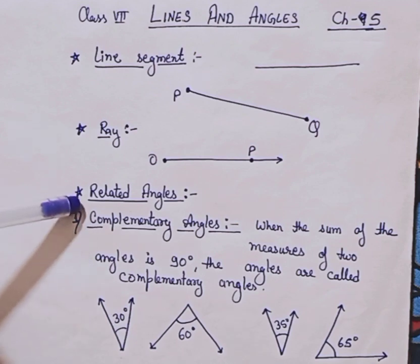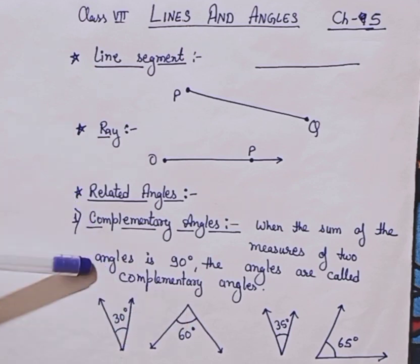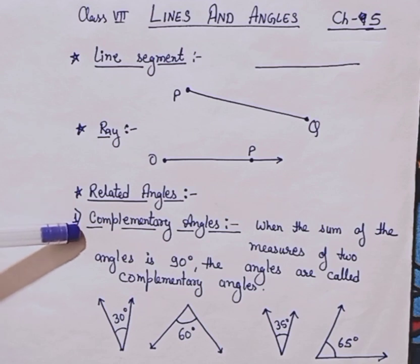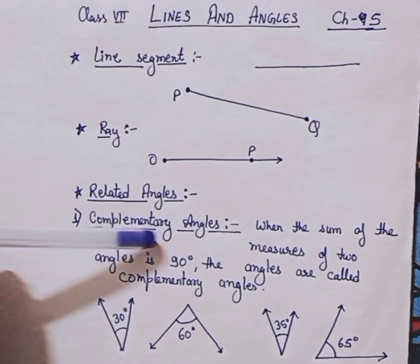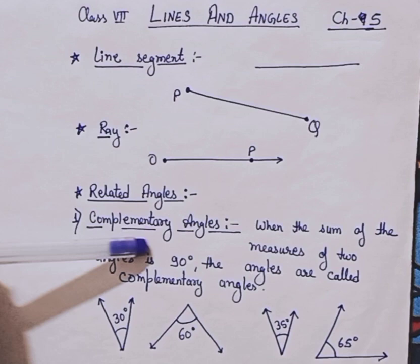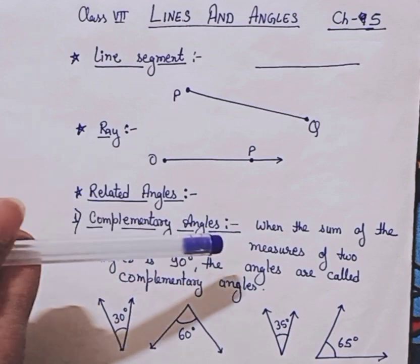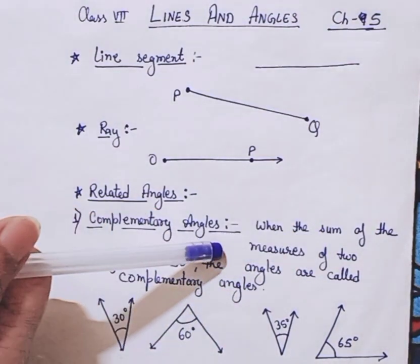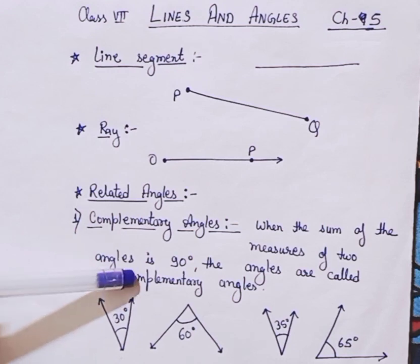So what are related angles? Related angles are simply those types of angles which are having some relation with each other. The first which I have covered over here is complementary angles. Complementary angles are simply when the sum of the measures of two angles is 90 degrees, then the angles are called complementary angles.